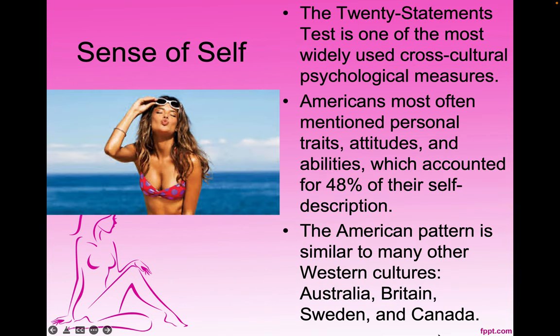The 20 Statements Test is one of the most widely used cross-cultural psychological measures. Psychologists really like it because it gives them an idea of how people in that culture think about themselves. One of the things we discovered was that Americans most often mentioned personal traits, their attitudes and their abilities — things like 'I'm a baseball player' — which counted for about half of their self-description.